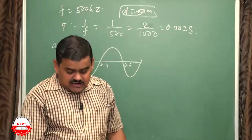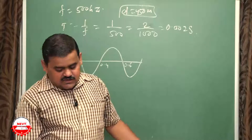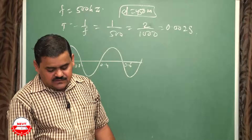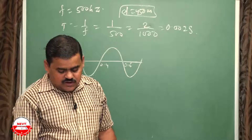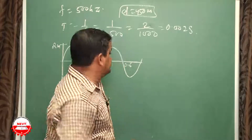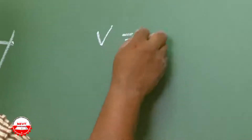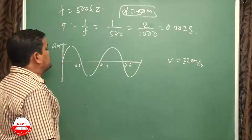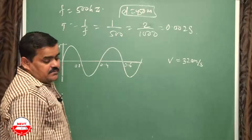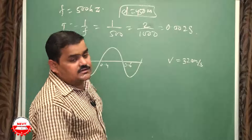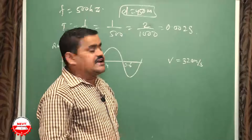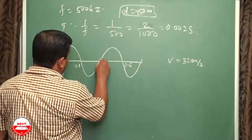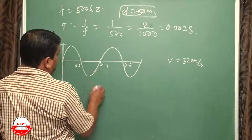Another important question: in the given distance-time graph for a wave, the wave velocity is 320 meters per second. From the graph, find the wavelength, frequency, and amplitude. From the graph, the wavelength from one point to the corresponding next point is 0.4 meters, so λ = 0.4 m.